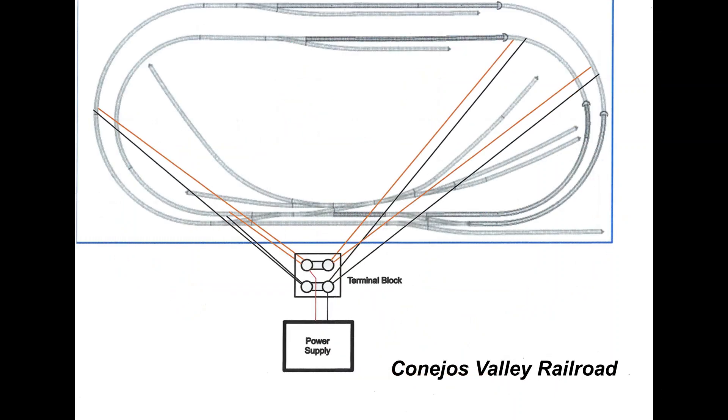So with time, rail joiners can go bad, either from corrosion or by getting loose or whatever. To prevent future problems down the line, I like to run multiple jumpers to various parts of the railroad.